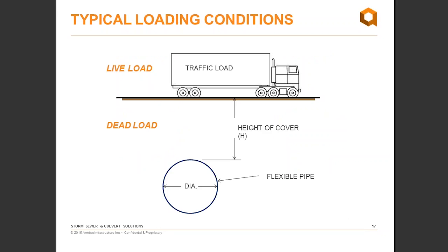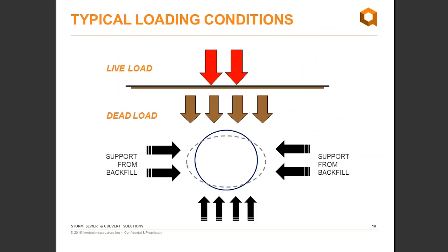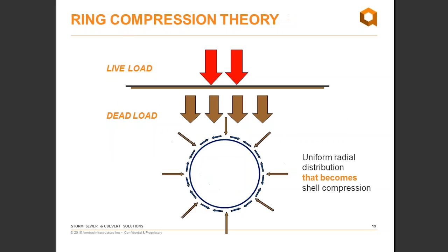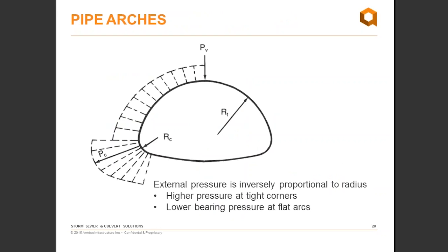Typical loading conditions involve two loads: live load and dead load, both depending on the height of cover over the pipe. These forces apply pressure on the pipe, which is then slightly bent, and support from surrounding backfill ensures the pipe keeps its shape. The pressure from dead load, live load, and backfill reaction applies a uniform radial distribution that becomes shell compression, and flexible structures perform very well under ring compression. Most pipes are round with uniform radial pressure, but this is different for a non-circular pipe like a pipe arch, where external pressure is inversely proportional to radius — meaning bottom corners apply higher pressure to the soil.